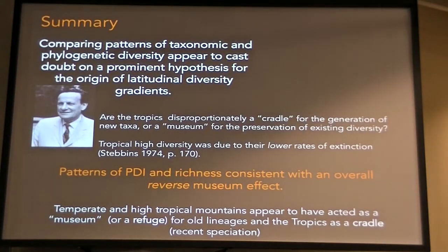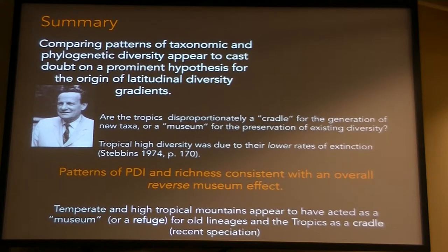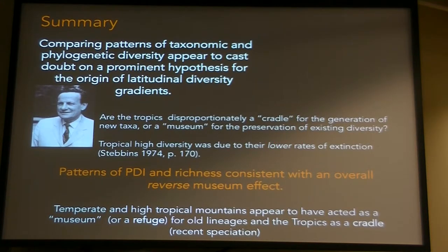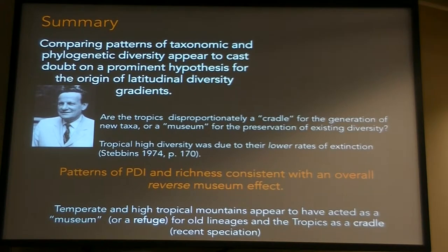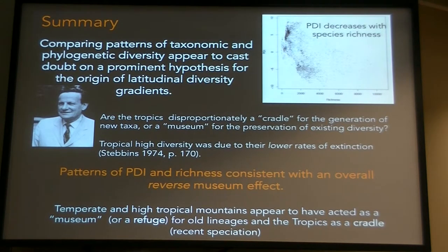How do we make sense of this? If we compare patterns of taxonomic and phylogenetic diversity, they can help us begin to assess various hypotheses for prominent processes happening across diversity gradients — in particular, whether the tropics are disproportionately a cradle for new taxa or for preservation of existing diversity. It was Stebbins who claimed tropical plant high diversity was due to lower extinction rates. But this negative relationship between PDI and richness is consistent with a reverse museum effect: the temperate zone and high tropical mountains appear to have acted as a museum for species with longer branches, while the tropics function more as a cradle.